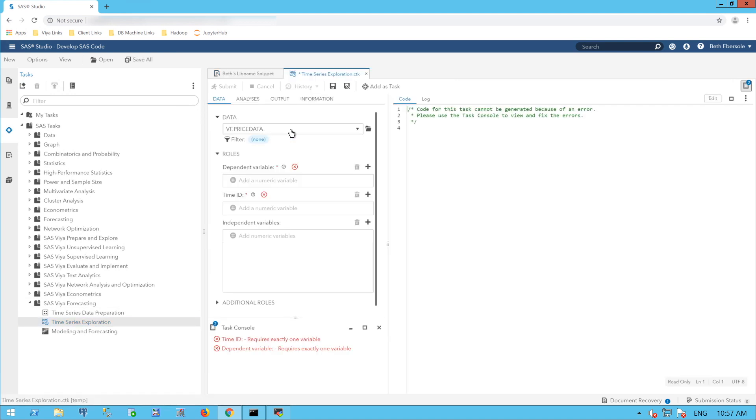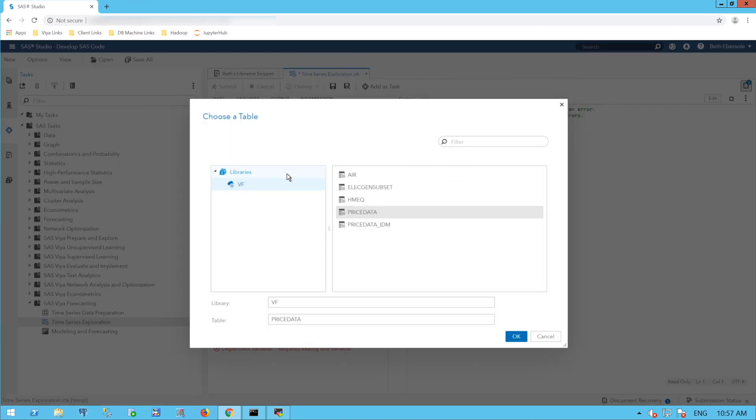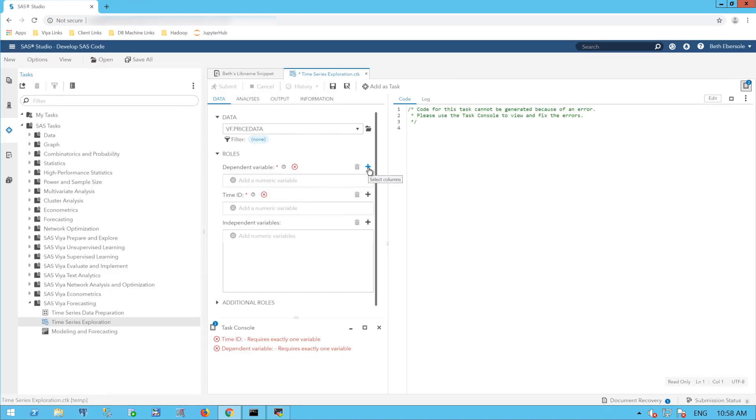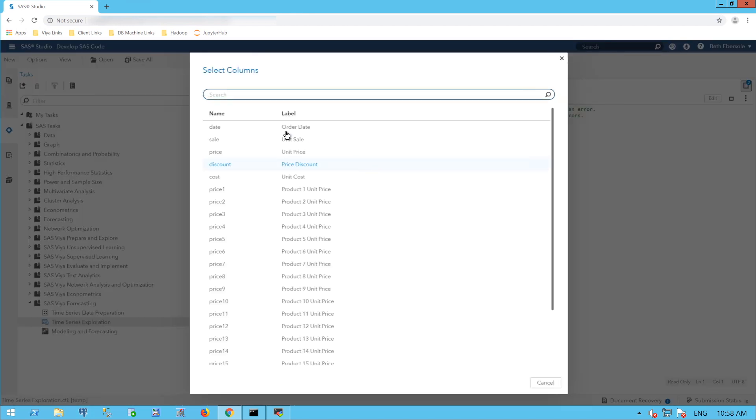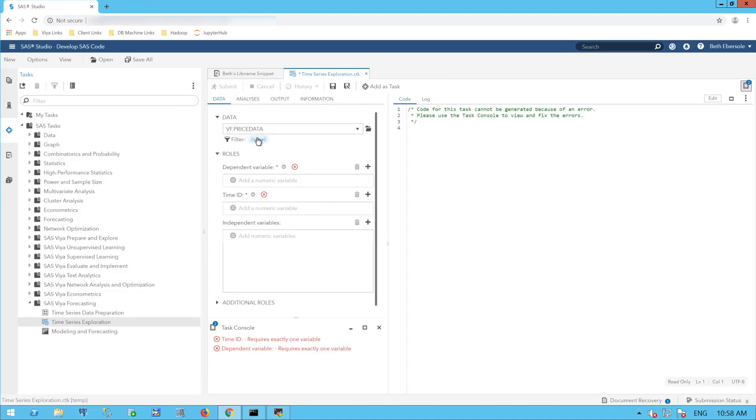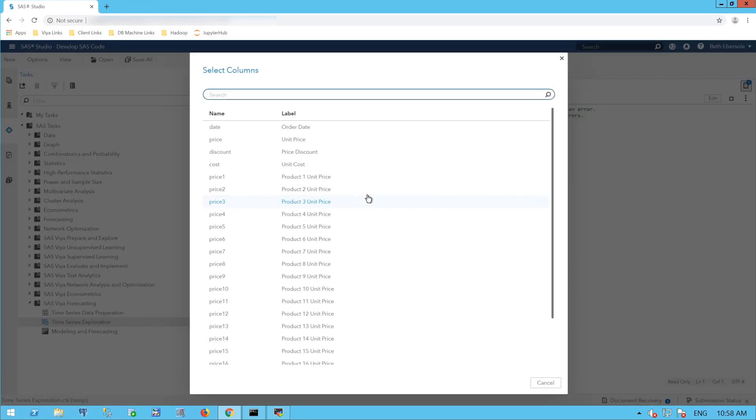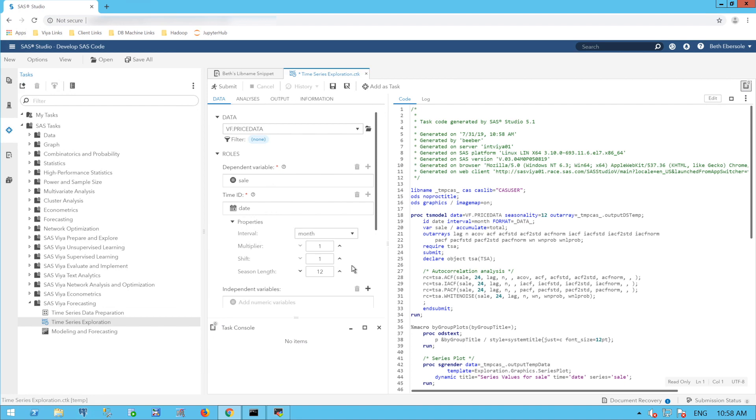The data I want are the VF price data, and I can browse here to find those. I can go to VF and Price Data. The roles I'm going to set is Sale as the dependent variable, or that's the item that I'm forecasting. For my Time ID, I'll select Order Date. I'll also add an independent variable.